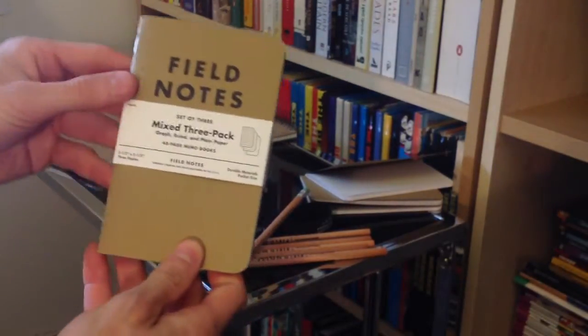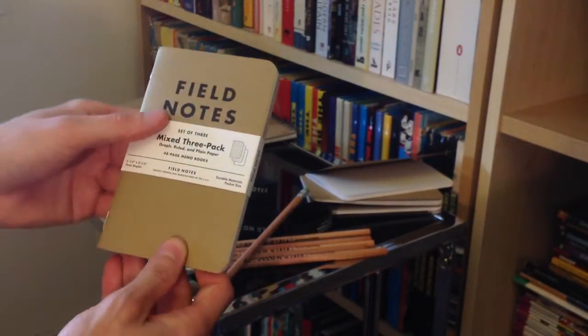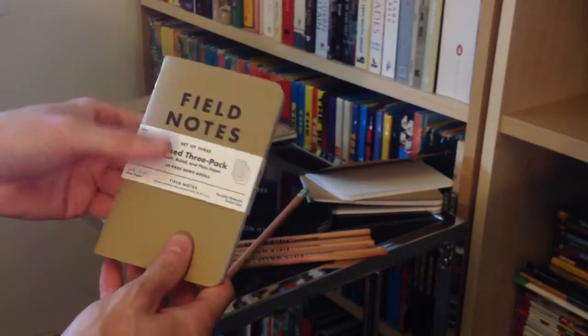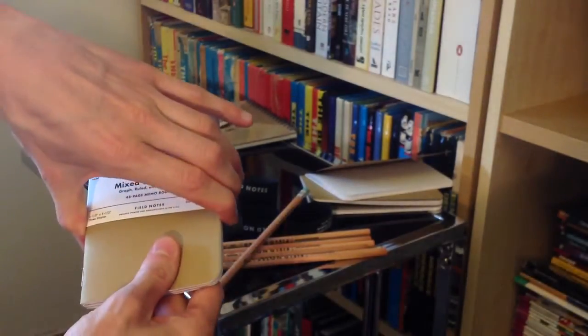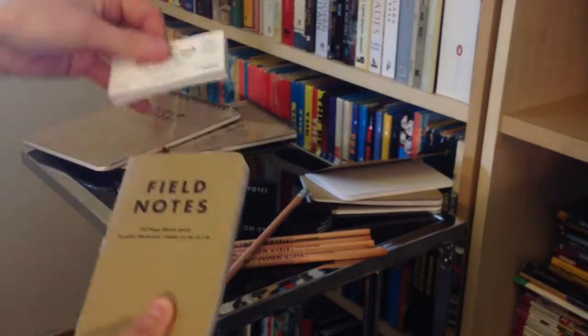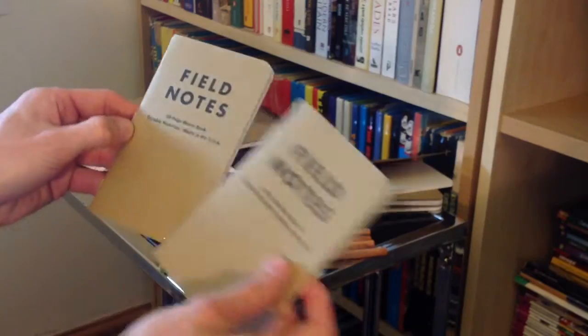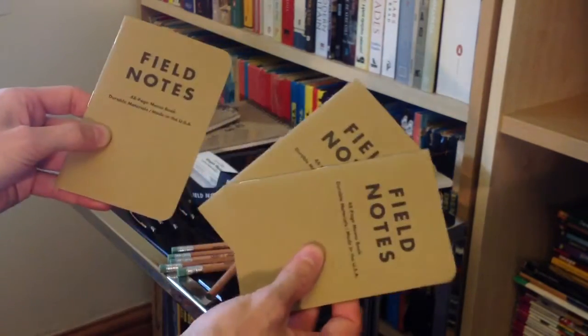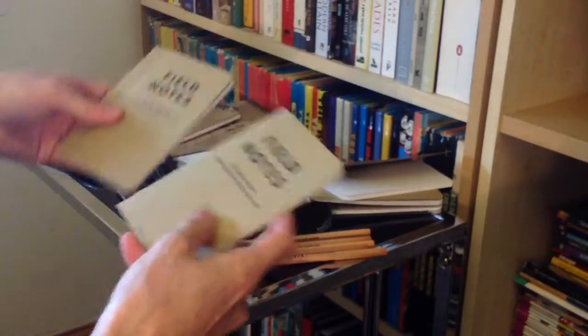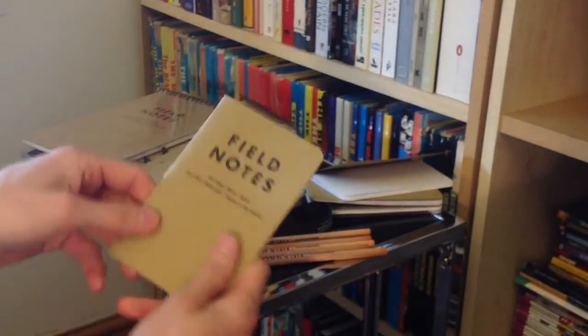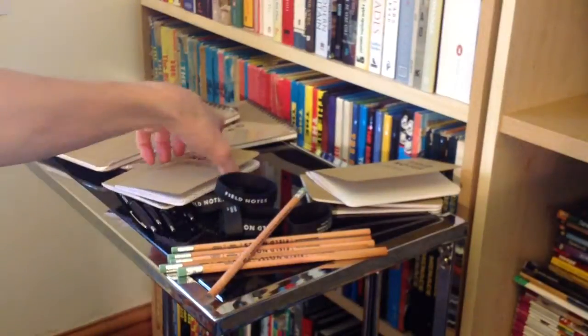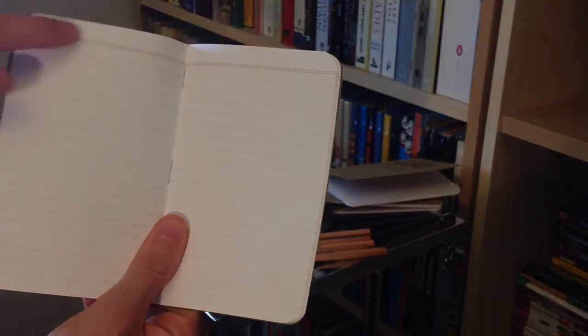As I say, this is the mixed set of three. So, that's graphed, lined, and blank. And anybody who's seen my other videos will know that I'm a big fan of writing on plain paper. Let's dive in once again. As you can see, it's all the same minimalist design that we've just seen. And if we pop these open, that is the graph one on the pile. A lined paper. As you can see, you've got a double line at the top and a top margin there.